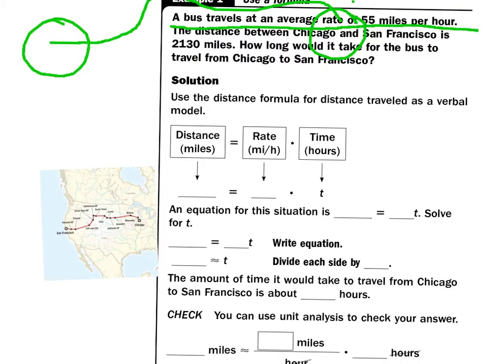So we're going to use the distance formula for distance traveled as a verbal model. Well, the total distance that I want to travel is 2,130 miles. And the rate at which I'm traveling is 55 miles per hour, and I want to know my distance in hours, or my time in hours. So 2,130 equals 55T. And if I divide both sides by 55, I get 38.7 as my amount of time. So it's going to take me 38.7 hours to get there.